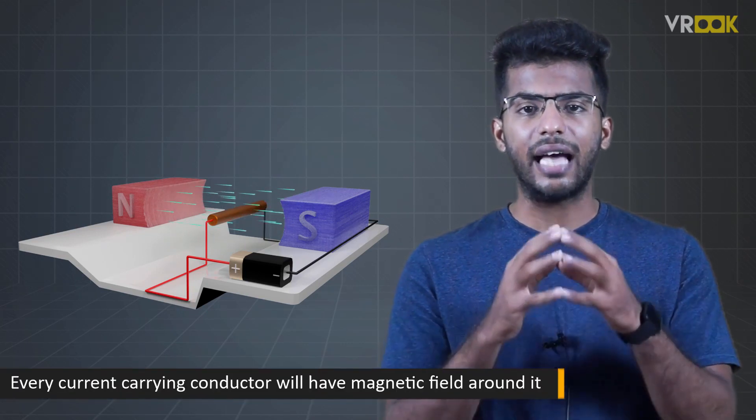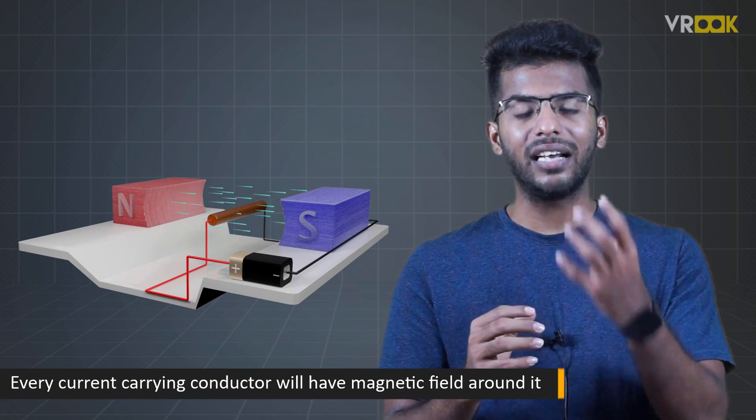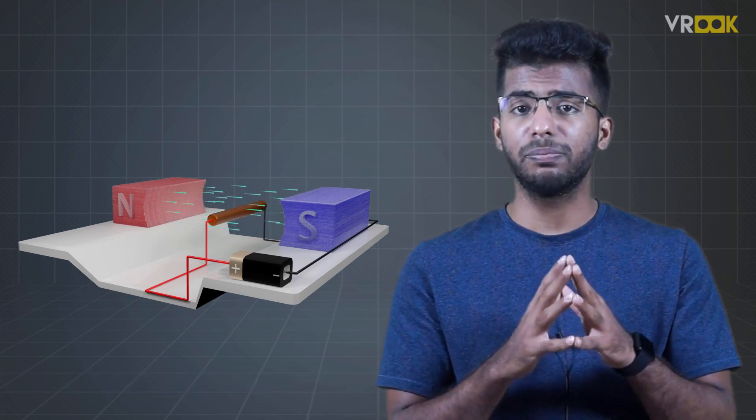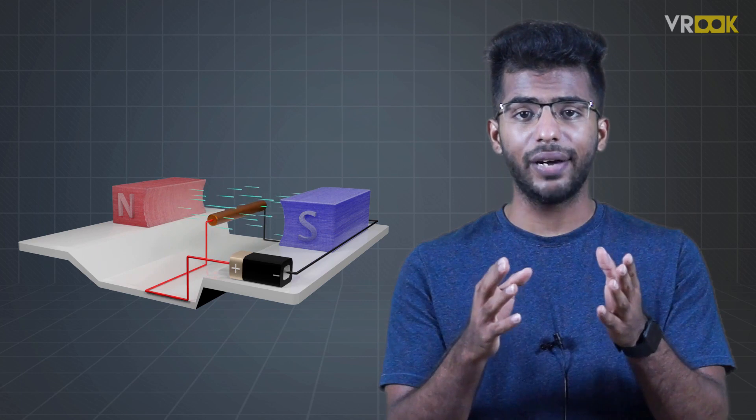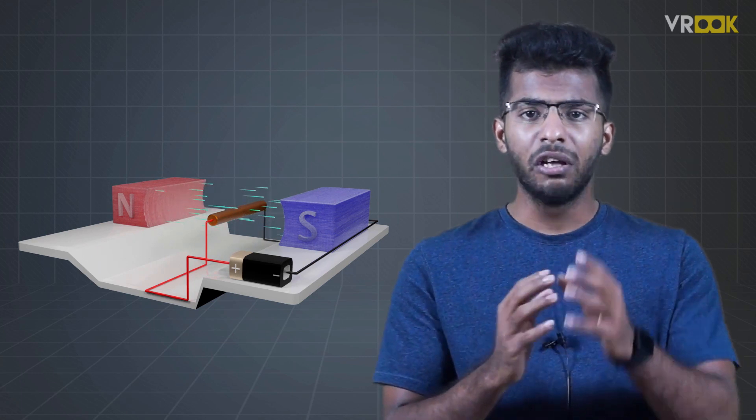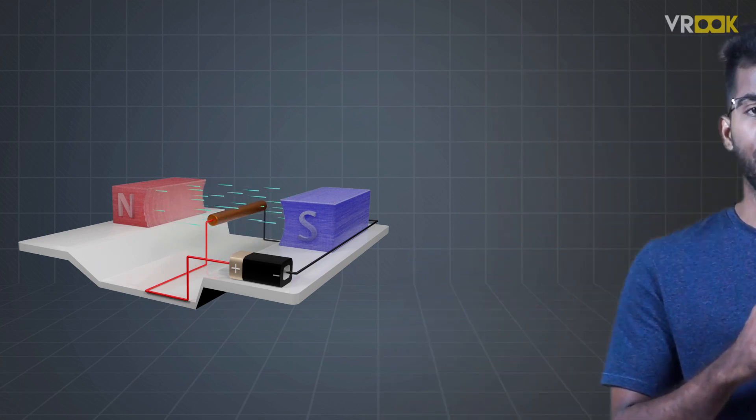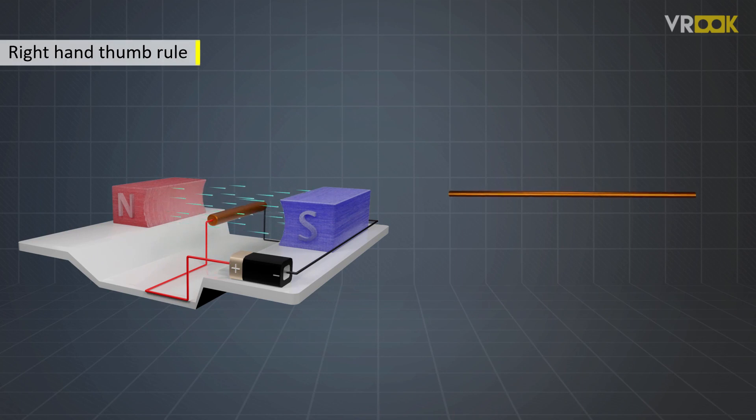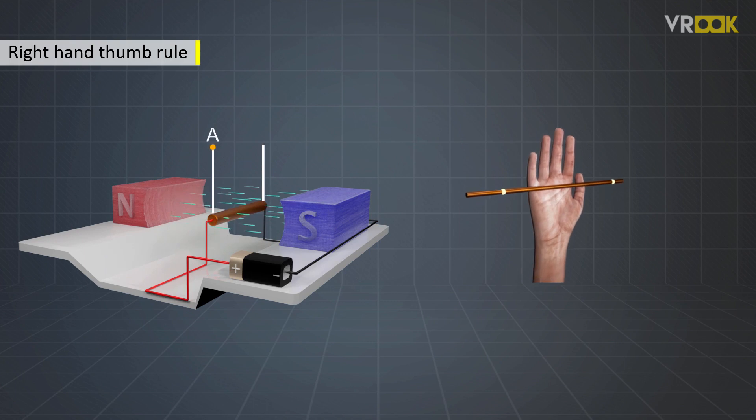Every current carrying conductor will have a magnetic field around it. The direction of this magnetic field can be clockwise or anti-clockwise. We can get to know that direction using right hand thumb rule. In our conductor, let us say the current is flowing from point A to B.